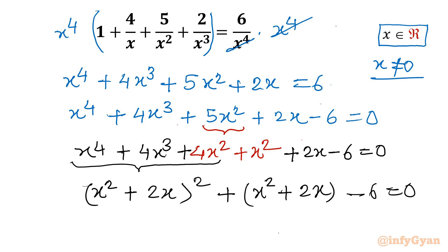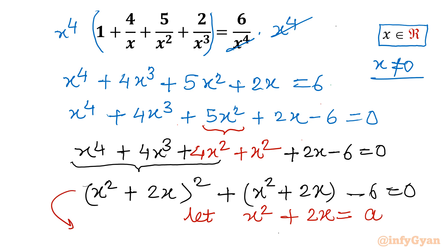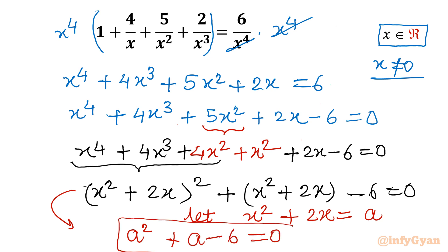Now substitution time. We will consider x squared plus 2x equal to a. So this equation becomes a squared plus a minus 6 equal to 0. Remember our substitution is x squared plus 2x equals a.